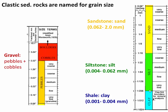Many clastic sedimentary rocks are named for their grain size. Gravel is made of pebbles and cobbles in the inch-to-several-inches range. Sandstone is made of sand, defined as particles between 0.06 and 2 mm. Siltstone is made of silt, between 0.004 and 0.062 mm — very tiny, visible but barely so. Shale is usually made of clay, down to about one micron — basically invisible to the naked eye. Clay particles require absolutely calm, dead-still water to settle; any energy in the water keeps them suspended.